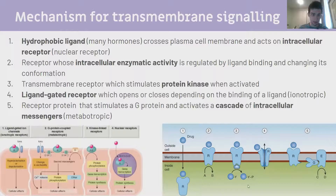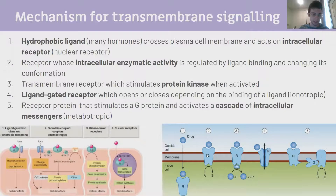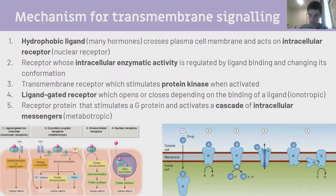Mechanism for transmembrane signaling. Hydrophobic ligands are lipophilic - they can cross the plasma membrane and act on an intracellular or nuclear receptor. Often hormones act like this. Another type is a receptor whose intracellular enzymatic activity is regulated by ligand binding changing its conformation. Another is a transmembrane receptor that stimulates protein kinase when activated. Ligand-gated receptors, called ionotropic, open or close depending on ligand binding - for example, acetylcholine binding lets sodium rush through. You can also have receptor proteins that stimulate a G-protein and activate a cascade of intracellular messengers - secondary messengers. Cyclic AMP is a secondary messenger and can be involved in calcium release.